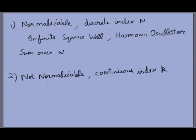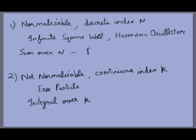In the second case, for a free particle, solutions were not normalizable. The linear combination was not a sum over discrete index n as for the infinite square well or harmonic oscillator, but rather an integral over k. These are two different types of solutions with different structures and properties, arising from two different problems — labeled as bound states and scattering states respectively.